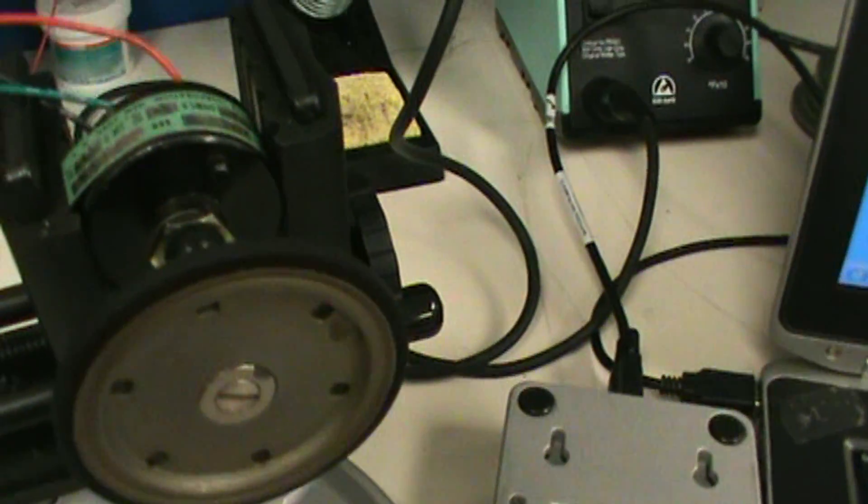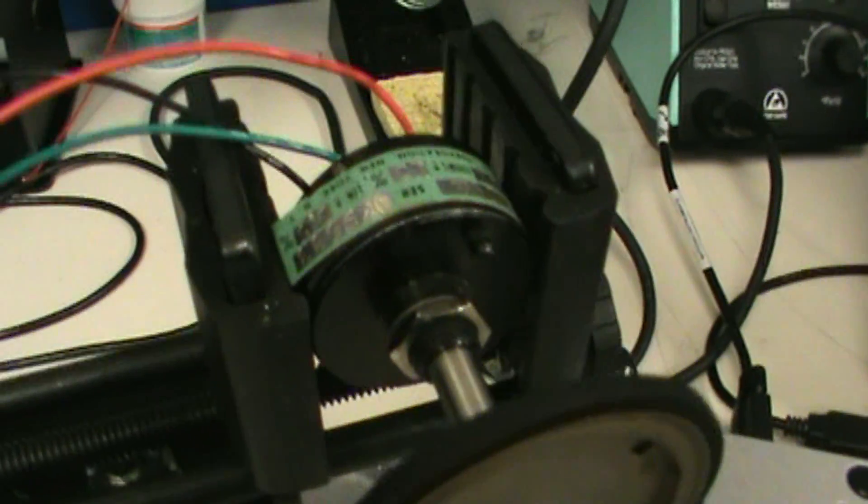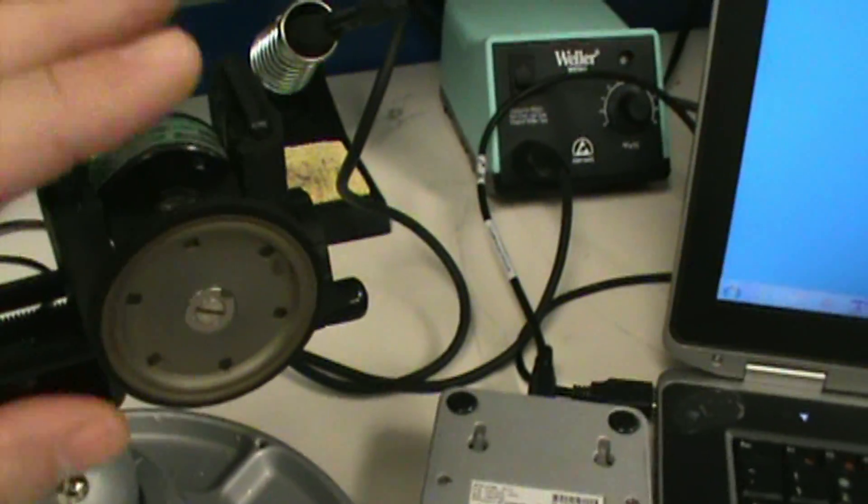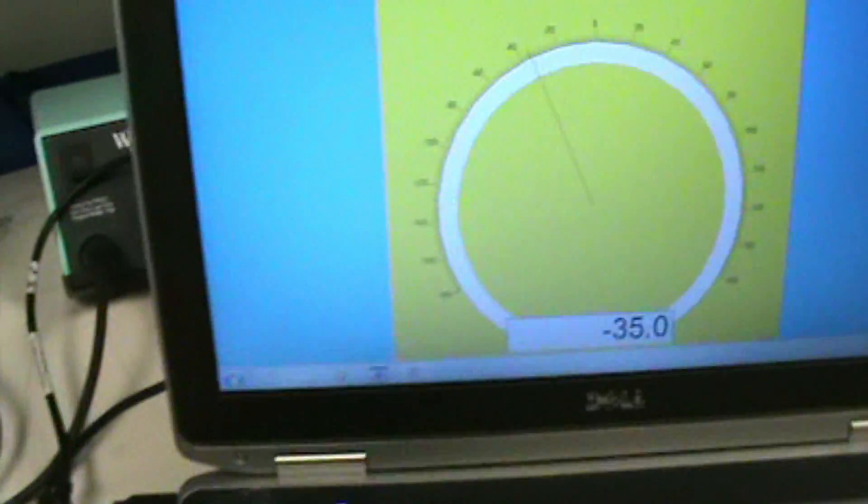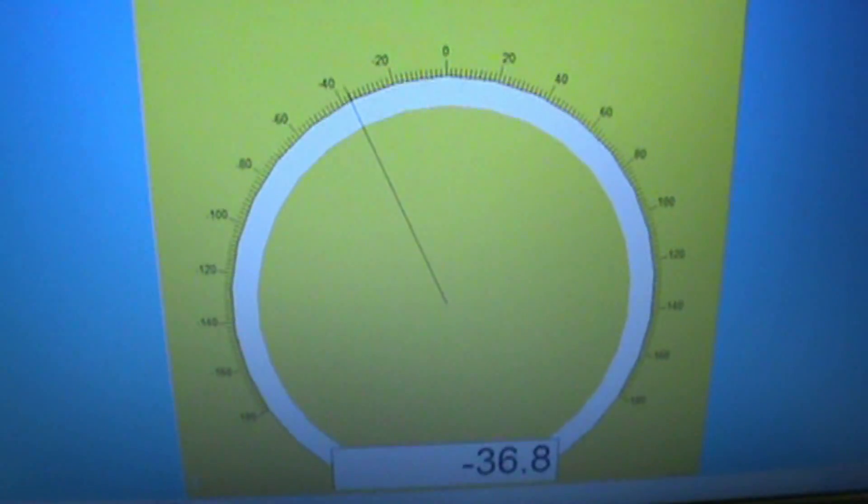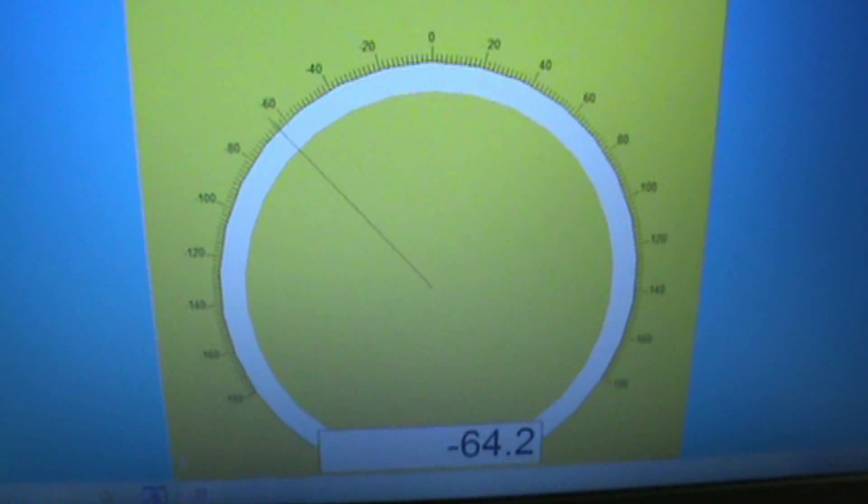With the pot, we're simply using it as a voltage divider. You could come into this with zero to five or plus/minus five volts. As you turn the wheel, you see on screen you can calibrate your output in degrees.